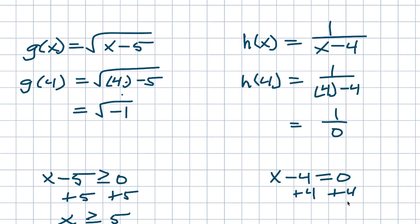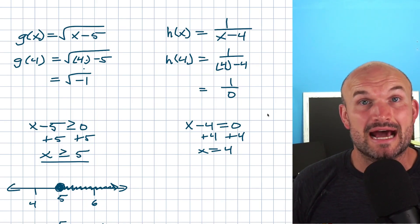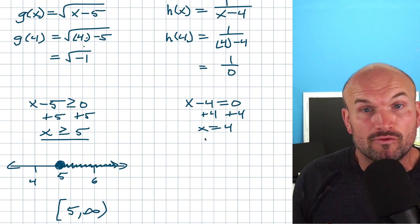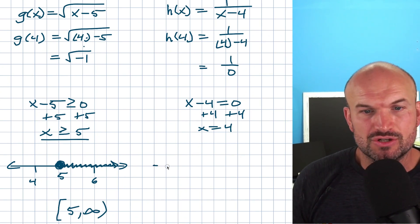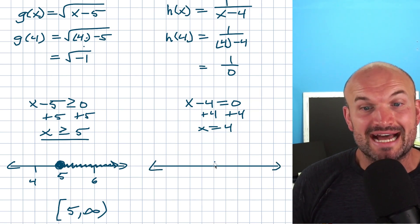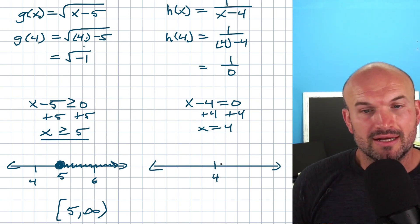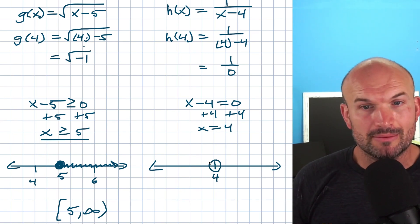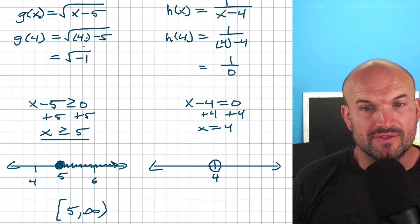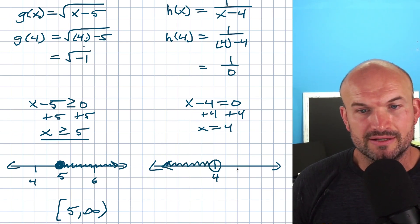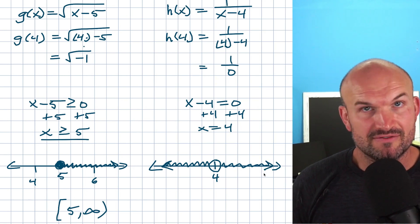Setting x - 4 = 0 gives x = 4. So x = 4 is not in the domain — you could write x ≠ 4. On a number line, there's an open circle at 4 since it's undefined. There's no other restriction, so the function is undefined only at 4, but defined for everything else from negative infinity all the way to positive infinity.